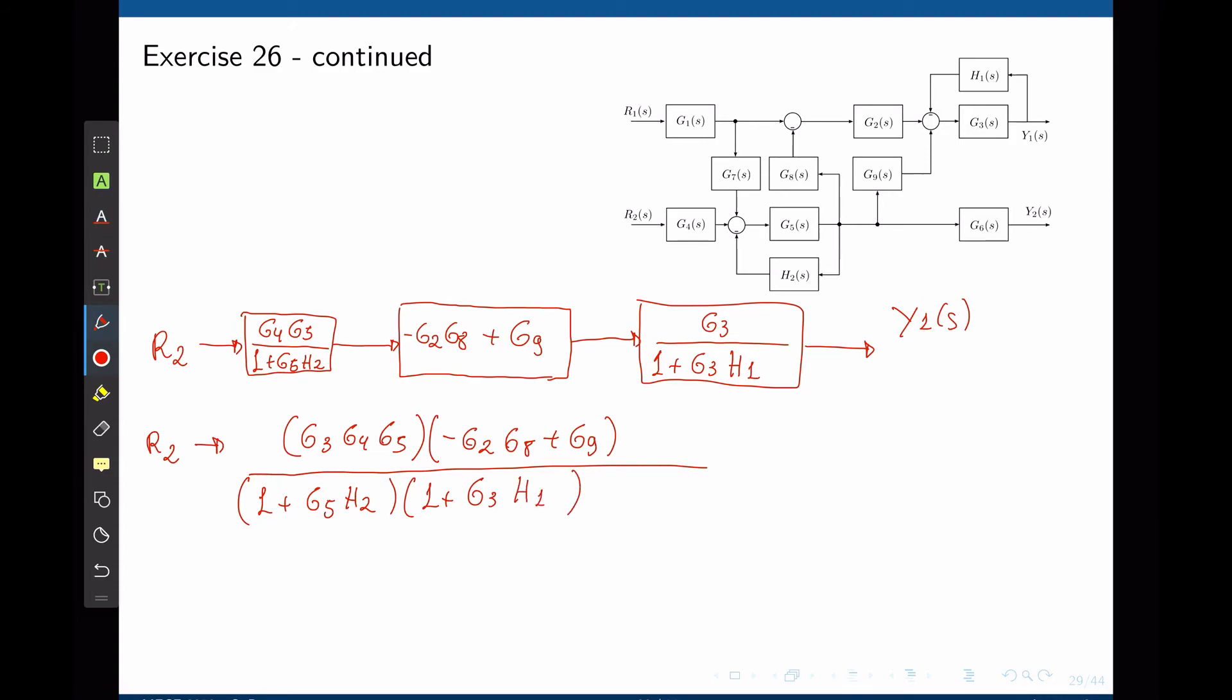And this is now the relation between R2 and Y1. So Y1 over R2 of S is negative G2 G3 G4 G5 G8 plus G3 G4 G5 G9,